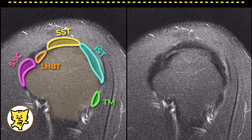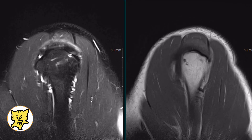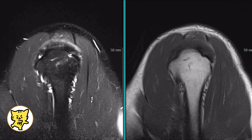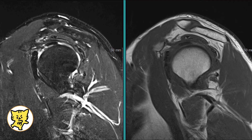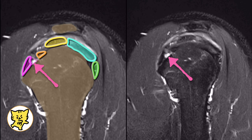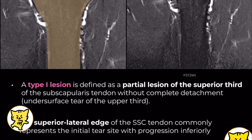Now, let's go back to the quiz. Can you see what's wrong? Here's what we're looking at: there's a partial tear of the superior third of the subscapularis tendon, specifically an undersurface tear. It hasn't detached completely, but you can see a fluid-filled defect at the superior lateral edge of the tendon, which is where these tears often start.